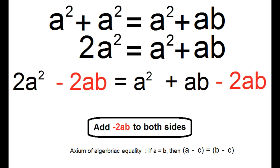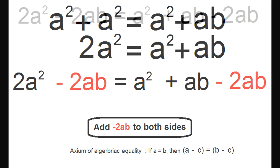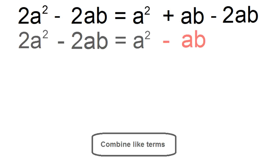Now we're going to subtract 2AB from both sides. Combine like terms. AB minus 2AB gives you negative AB.